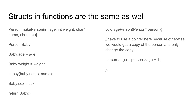Functions can accept structs. For example, here's a make_person function that returns a person — you pass in age, weight, name, sex, and it creates a temporary person called baby, sets all the fields, and returns it. Remember in C you can only return one thing. The way to get around returning only one thing — similar to returning a list or tuple in Python — is to return a single struct that contains all the elements you need.